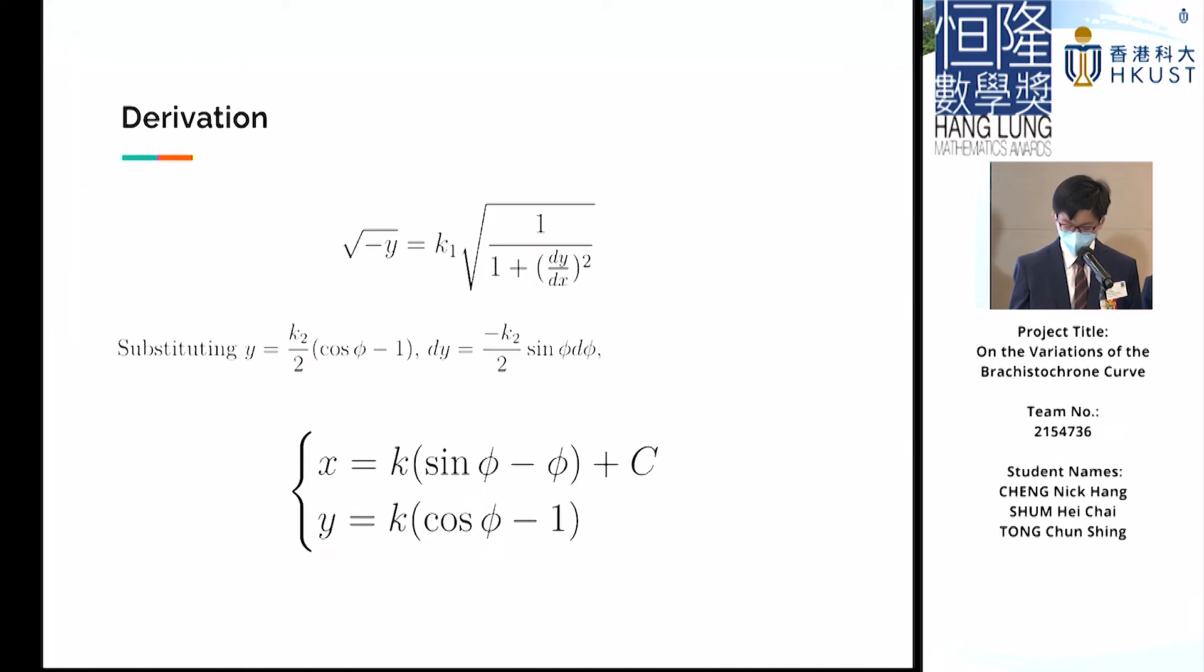Expressing cos(θ) in terms of dy/dx and applying an appropriate trigonometric substitution, we obtain a parametrized form, or the Brachistochrone curve, where the constants k and c can be solved to fit the starting and ending points. This also happens to be the parametric equation describing a cycloid.